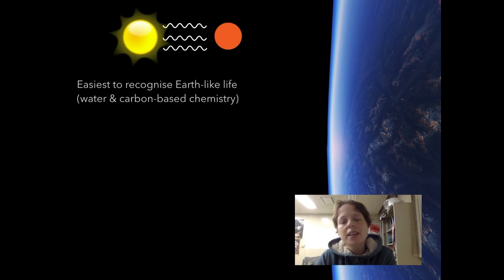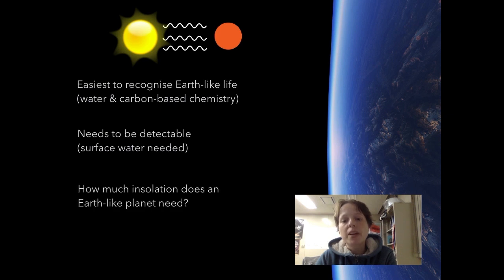Let's think about what we want to find. It's going to be easiest to recognise Earth-like life, that is, water and carbon-based chemistry. Also, this needs to be detectable, which means the water needs to be on the surface of the planet, not a subsurface system like Europa. Based on this, we can ask the question: how much insulation does an Earth-like planet need? The answer to this is a classical habitable zone.